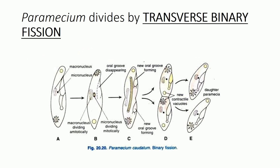Now let's go through the steps that happen when binary fission occurs in paramecium — it is obviously a transverse type of binary fission. First, let's familiarize ourselves with a few basics from previous lectures. Paramecium caudatum has two nuclei, showing nuclear dimorphism: it has a bigger macronucleus and a smaller micronucleus. It also has two contractile vacuoles — an anterior contractile vacuole and a posterior contractile vacuole. The blunt end is the anterior end while the pointed end is the posterior end.